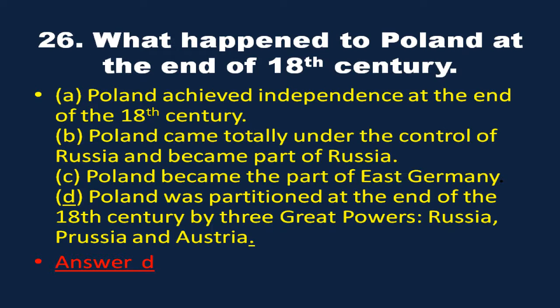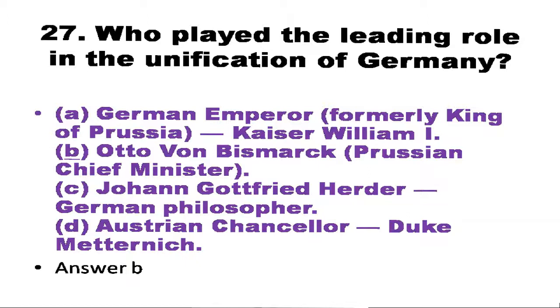Next question: What happened to Poland at the end of the 18th century? Poland was partitioned at the end of the 18th century by three great powers: Russia, Prussia, and Austria. Next question: Who played the leading role in the unification of Germany? The answer is Otto von Bismarck, the Prussian chief minister.